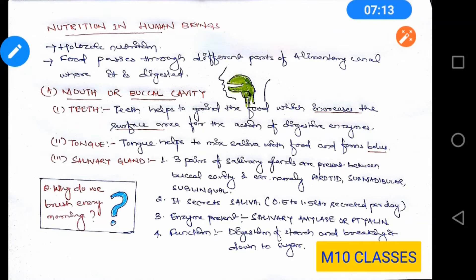The salivary glands are namely parotid, submandibular, and sublingual, though these names are not important from your exam point of view. The salivary gland secretes saliva — around 0.5 to 1.5 litres of saliva is secreted per day. Saliva contains an enzyme called salivary amylase or ptyalin, which helps in the digestion of starch and breaking it down into sugar.